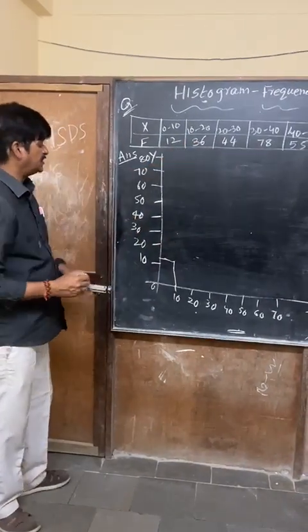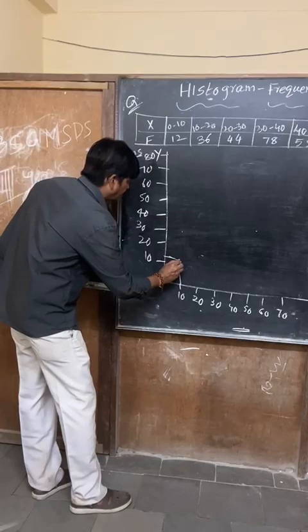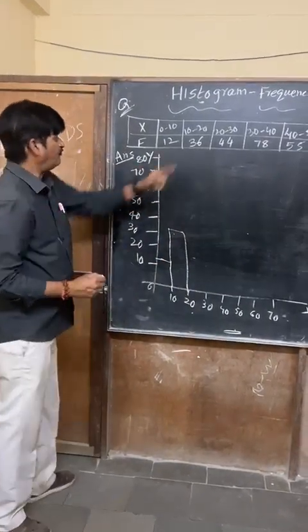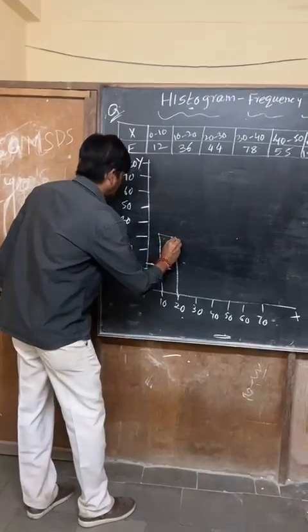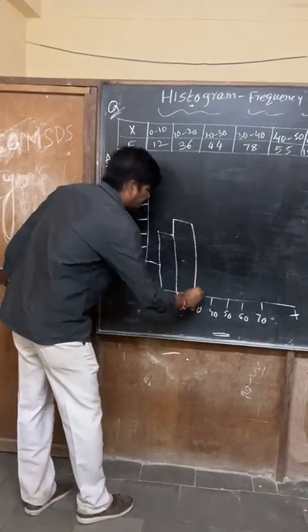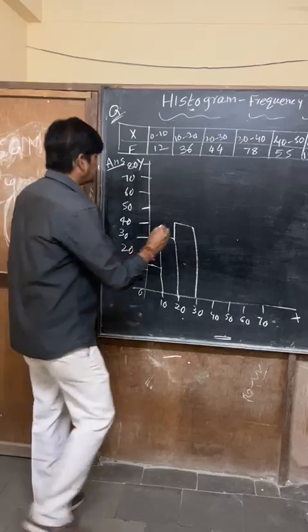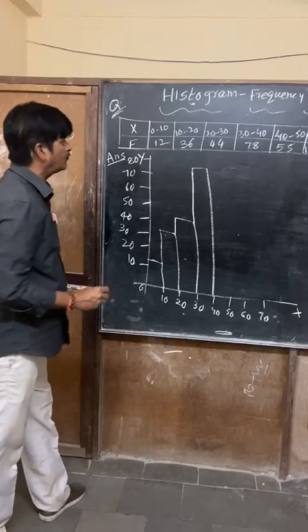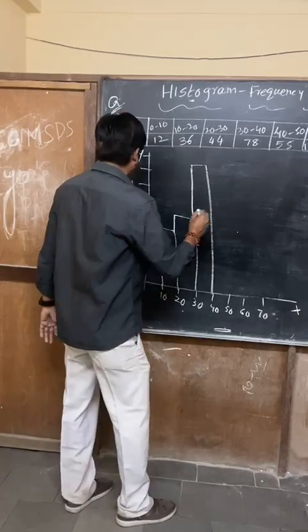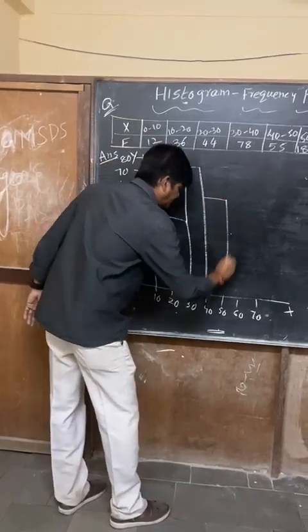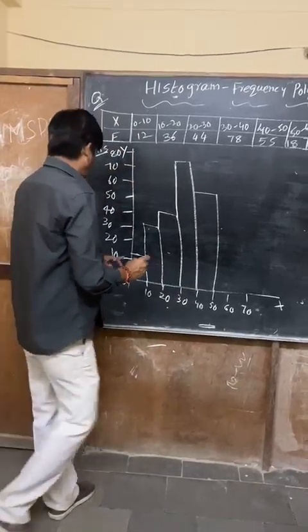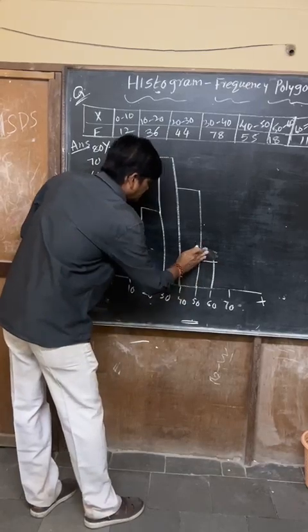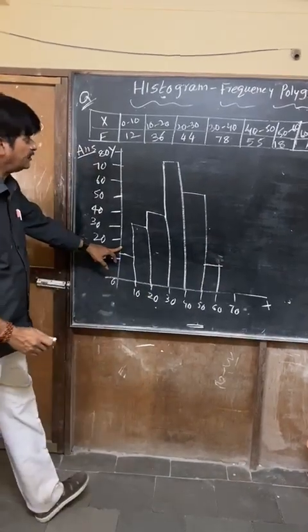Then, 36 — mark it like this. Next number: 44. Quickly I am doing, not wasting your time. Then 78 — take the scale and do it perfectly. Then 55 — my dear students, mark 55. Then 18, and then 11.